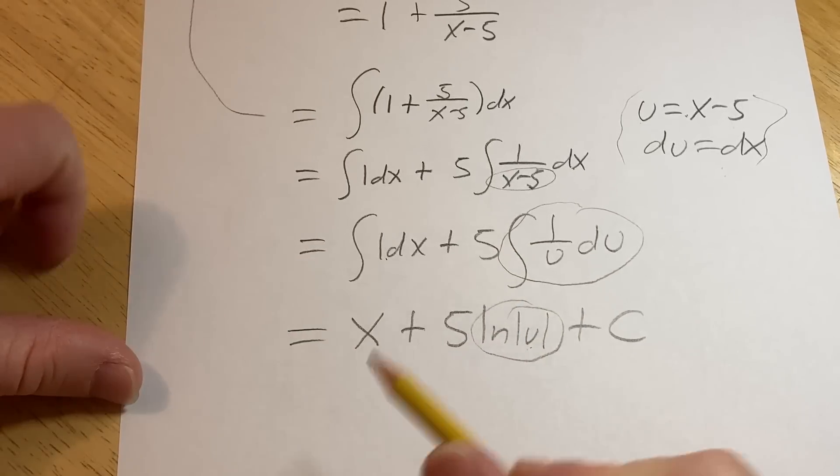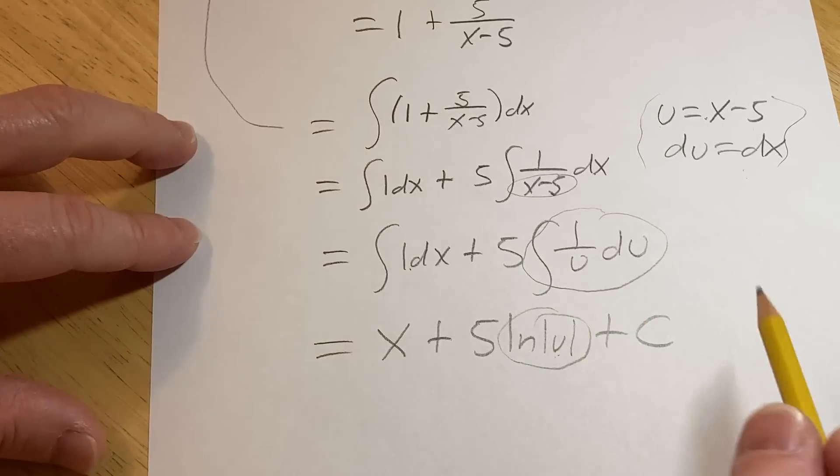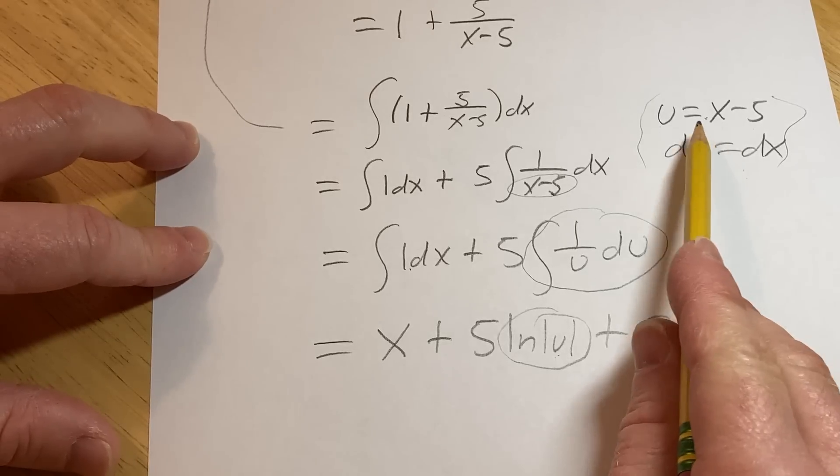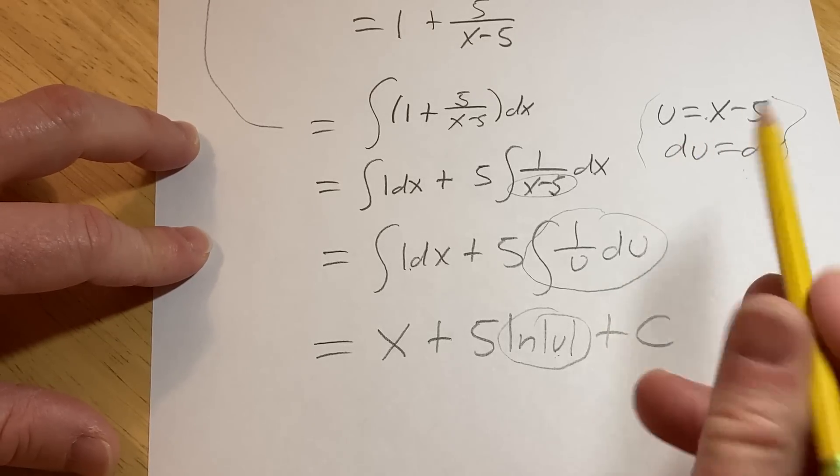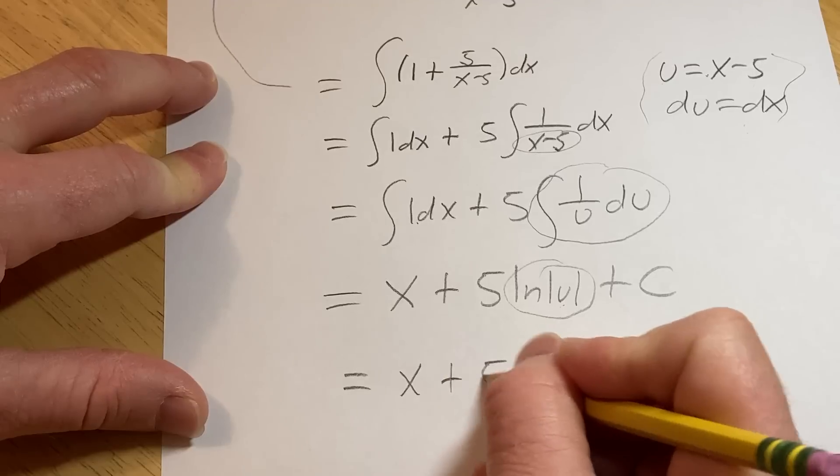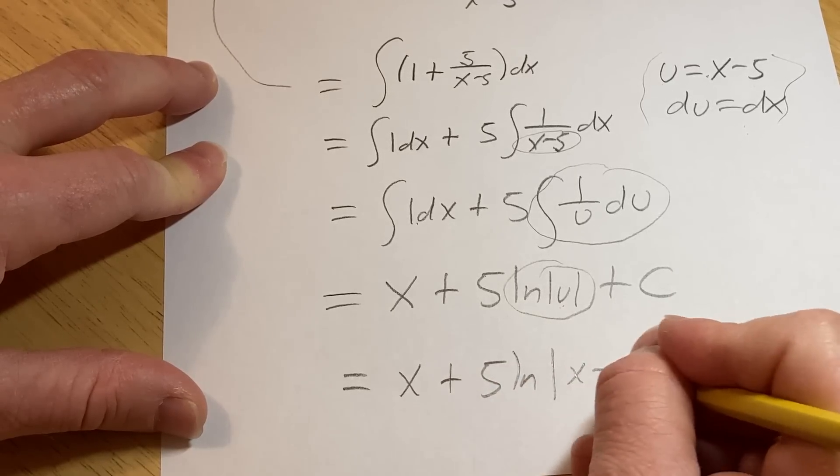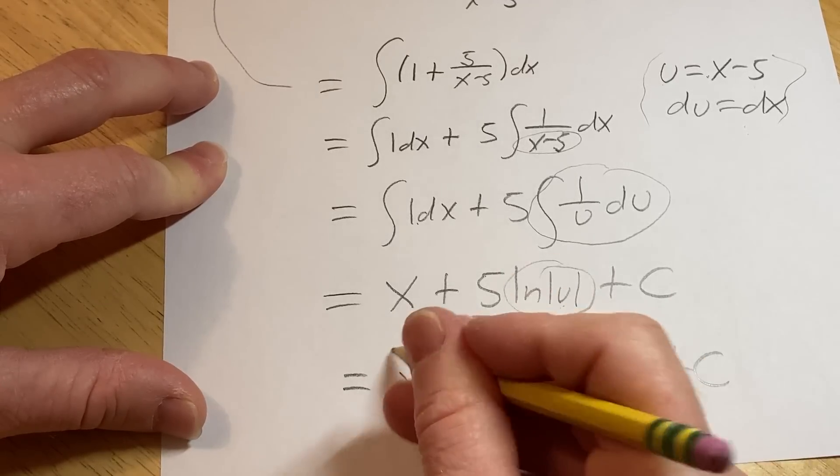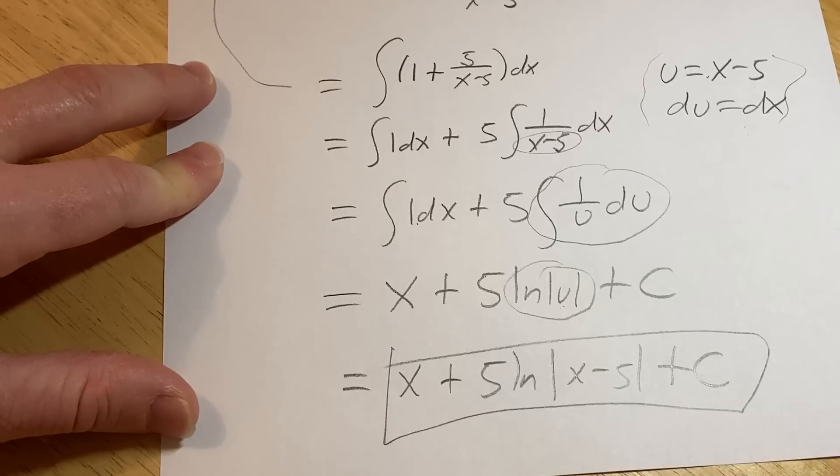And we're not done. We have to go back to the original value of x, which was x minus 5, rather. So u is x minus 5. So this is x plus 5 natural log absolute value x minus 5 plus our constant of integration capital C.